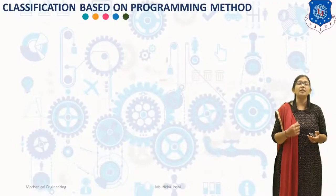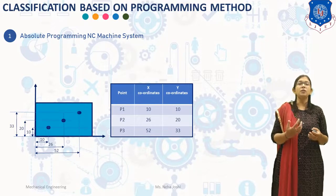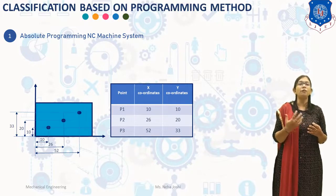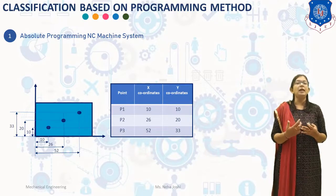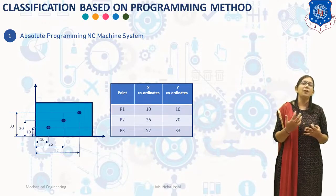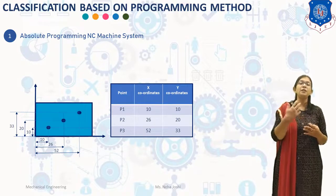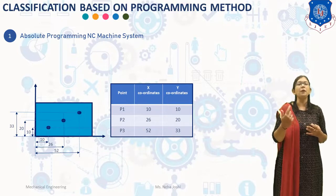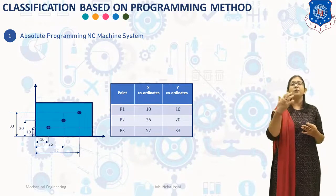Classification based on the programming method: when preparing a machining program for a component, it is necessary to specify the path for the tool movement. The geometric data of the component is converted into a machine-understandable program. According to the method of programming the tool movement path, NC machine systems are classified into two types. In absolute programming NC machine systems, using the Cartesian coordinate system with absolute measurement, each point is always specified using the same zero established for a given coordinate system. For example, consider three points P1, P2 and P3. Coordinates of P1 are (10,10), P2 is (26,20), and P3 is (52,33), all specified using the same zero.